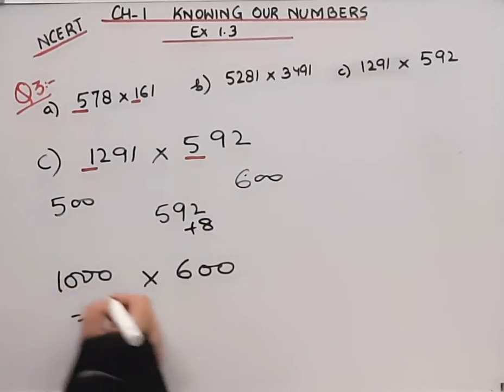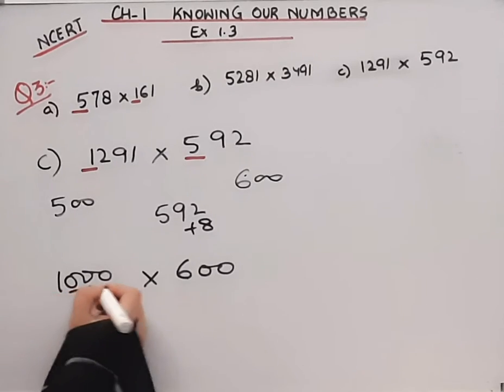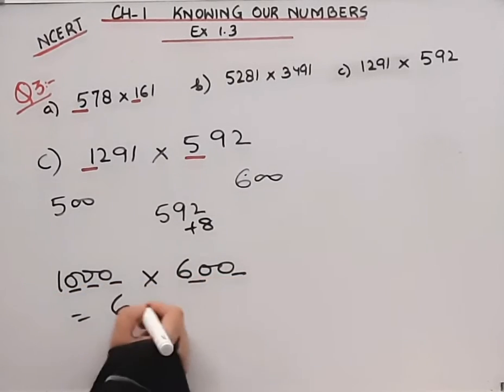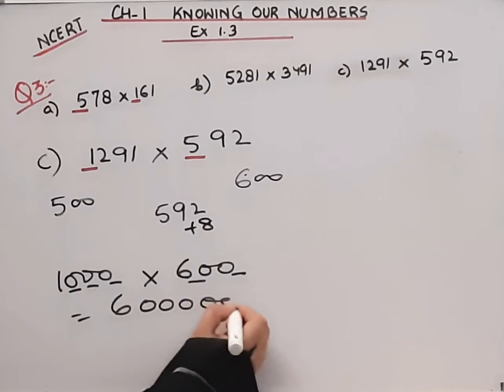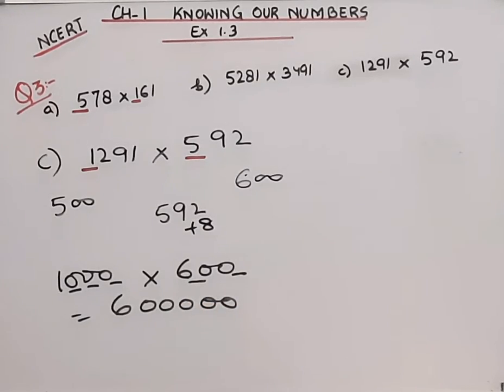600 times 1000 is 600,000. This will be the answer for the C part.